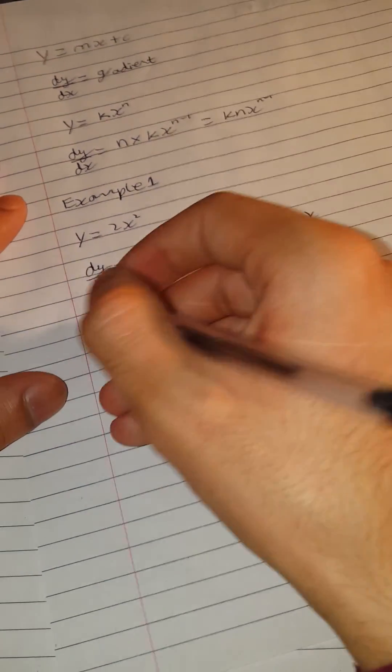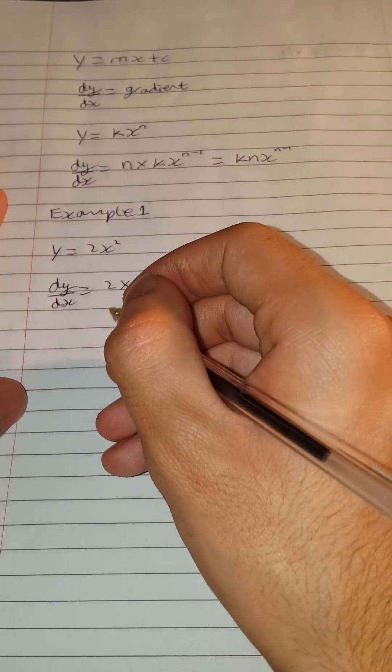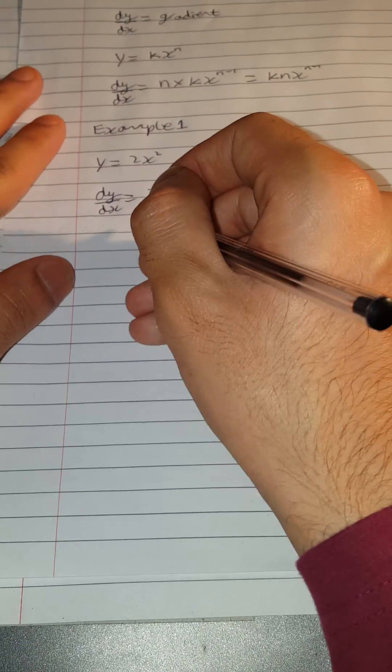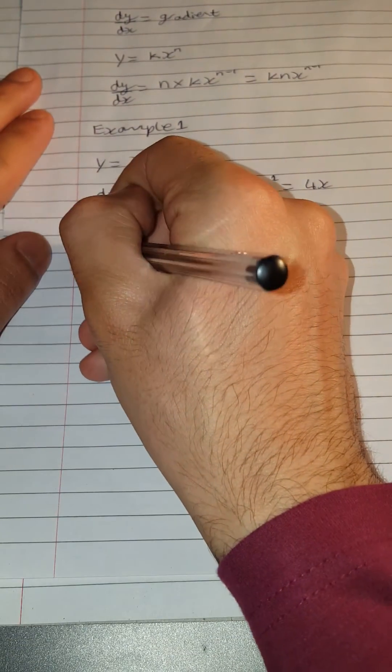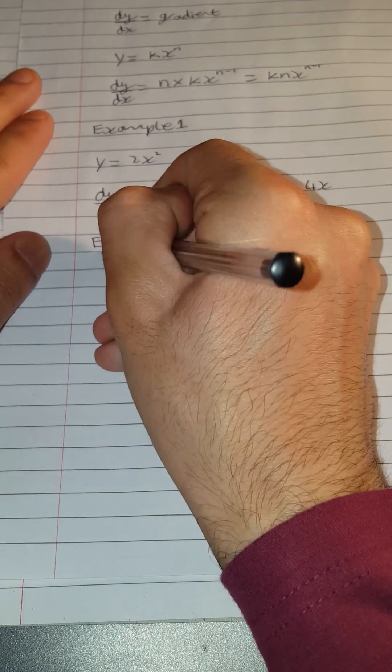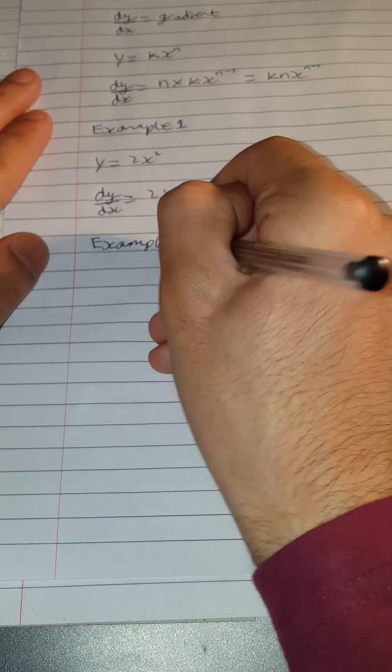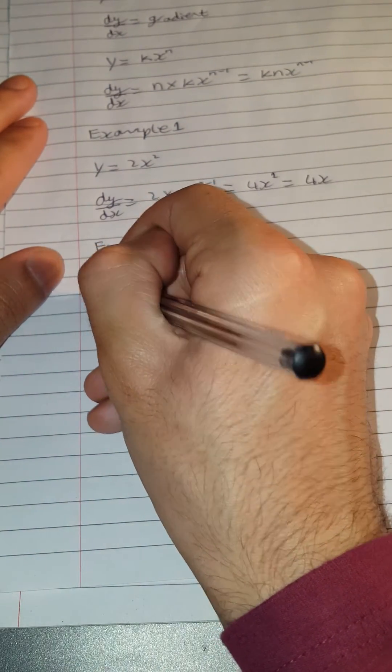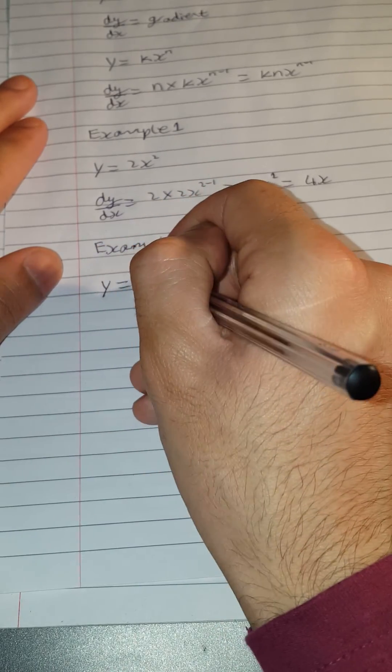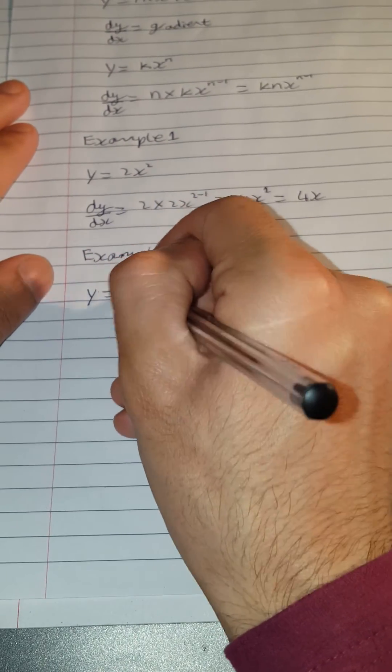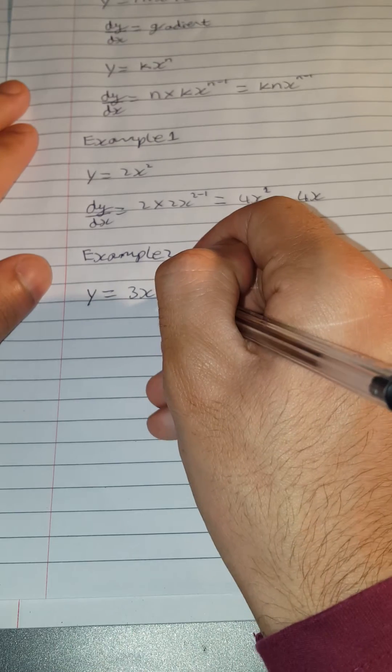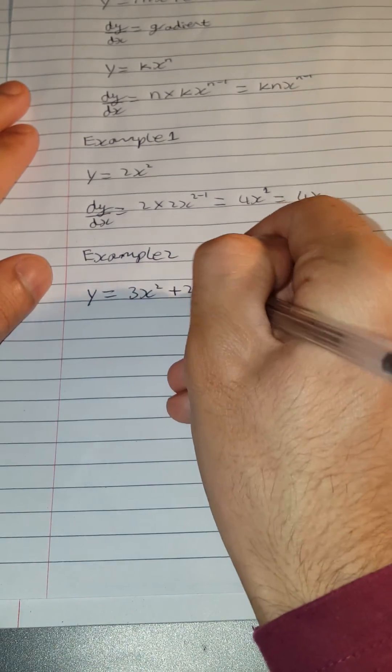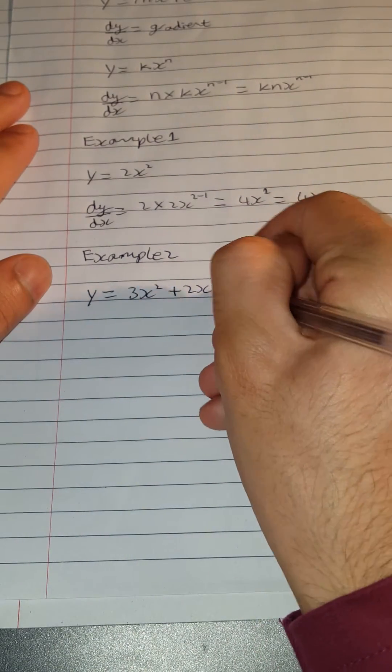Now if we look at a slightly more difficult example. Let's say we have a complex curve which is y equals 3x squared plus 2x plus 7.